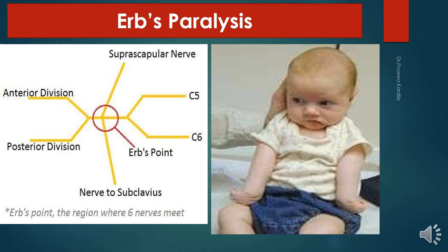The causes are mainly undue separation of the head from the shoulder in birth injury, fall on shoulder, or during anesthesia. The nerve roots involved are C5 and C6.